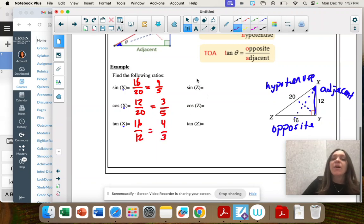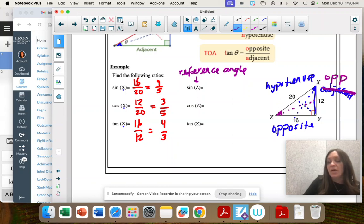So notice now our reference angle is z. And now our hypotenuse always stays. But if I'm looking at z, across from z, this will become the opposite. And this will become the adjacent. They switch opposite and adjacent.